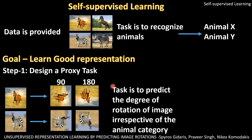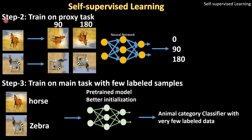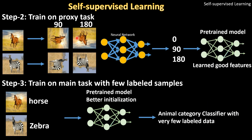There's no manual effort required to label it — you can just write a program to rotate the image and don't need any expert. Step two is to train the network on this proxy task of predicting the rotation. In doing so, the model learns good representations from the image, because in order to predict how much it's rotated it has to look into the image — for instance, if a horse's leg is pointing down it's 0 degrees, if it's on the left it's 90 degrees. These learned features can then be transferred for the actual downstream task, such as an animal classifier, with very few labeled samples.